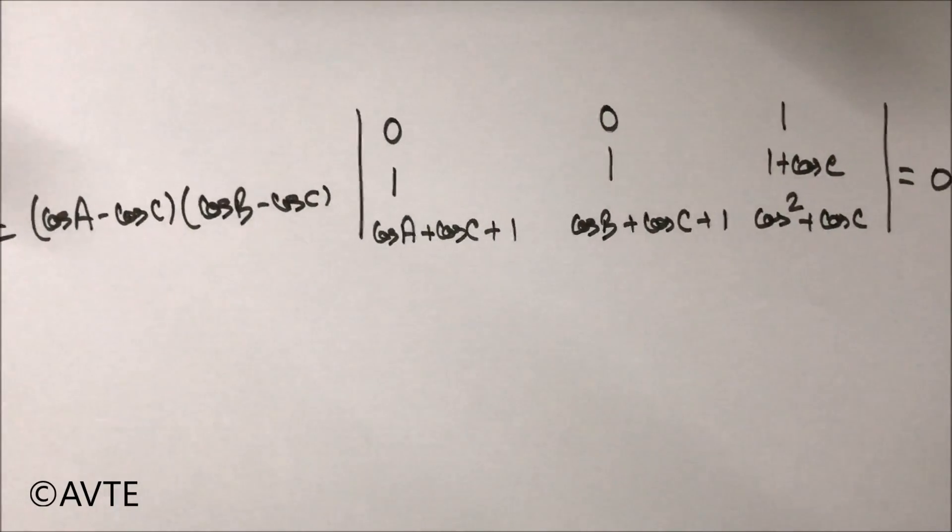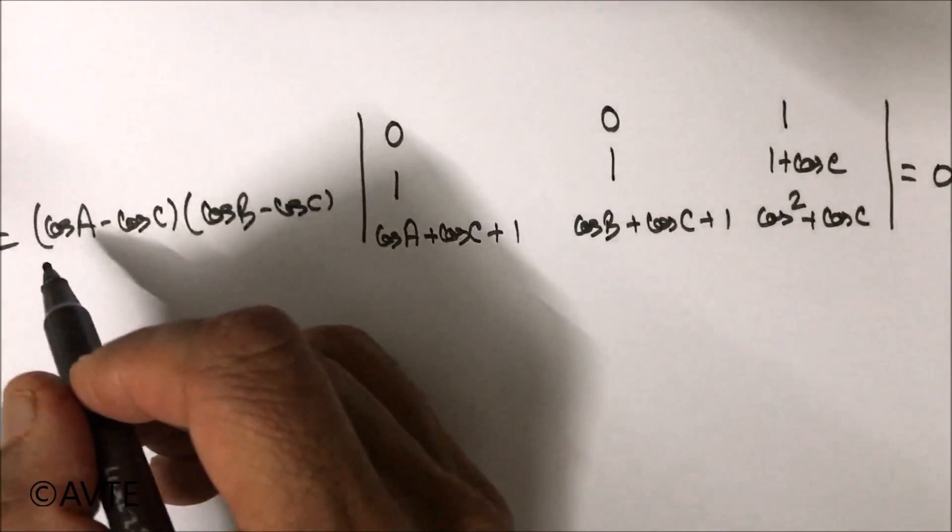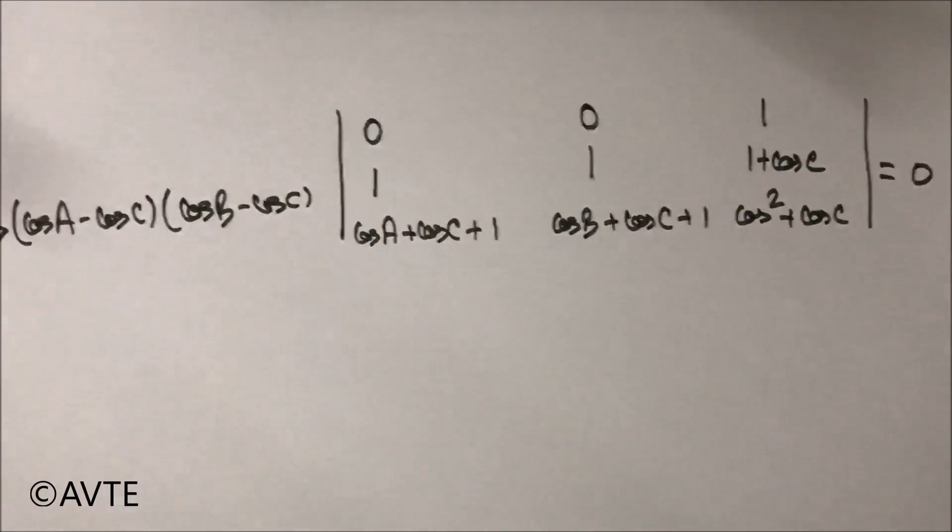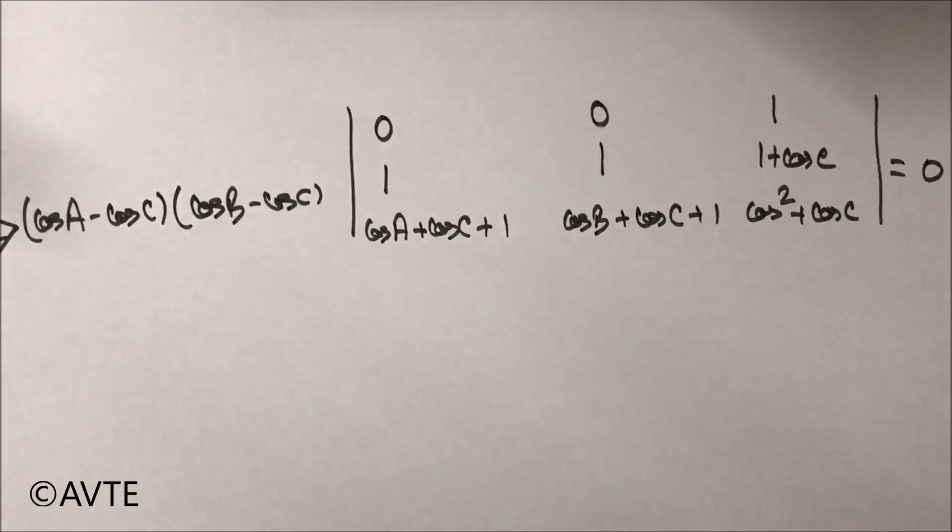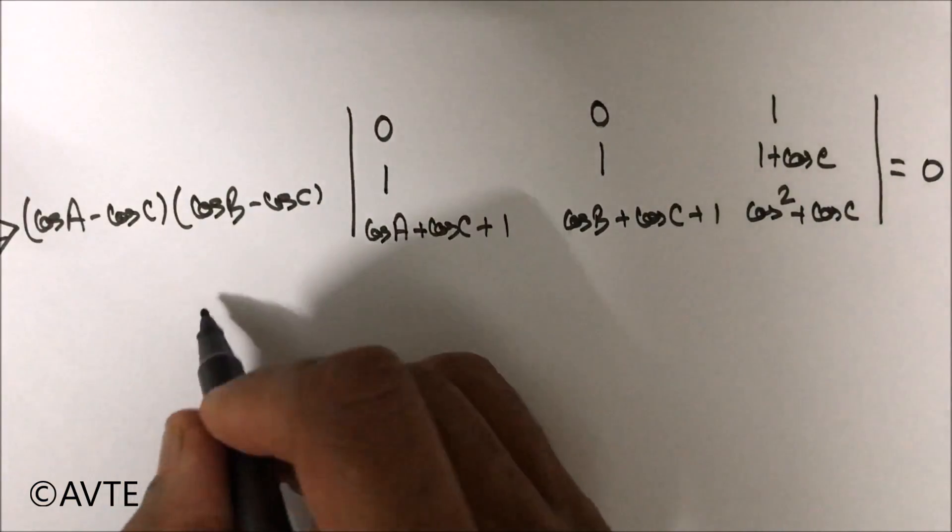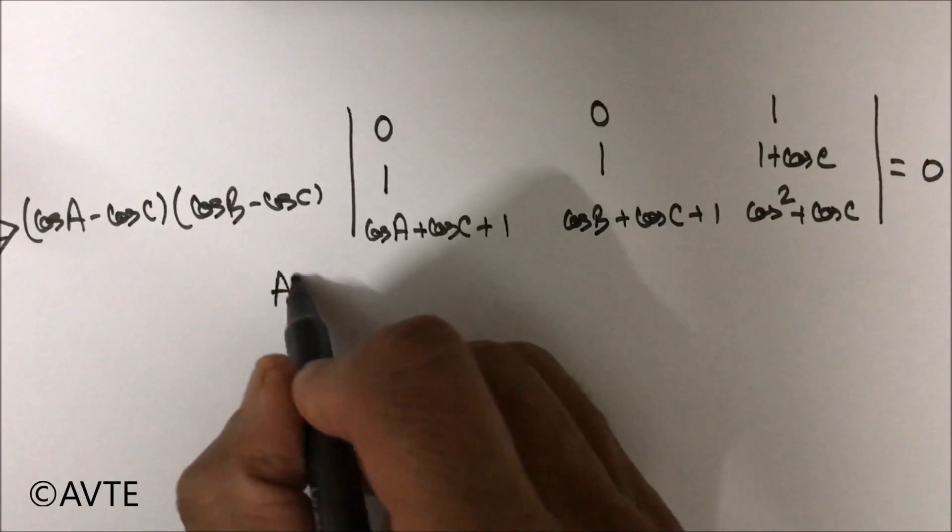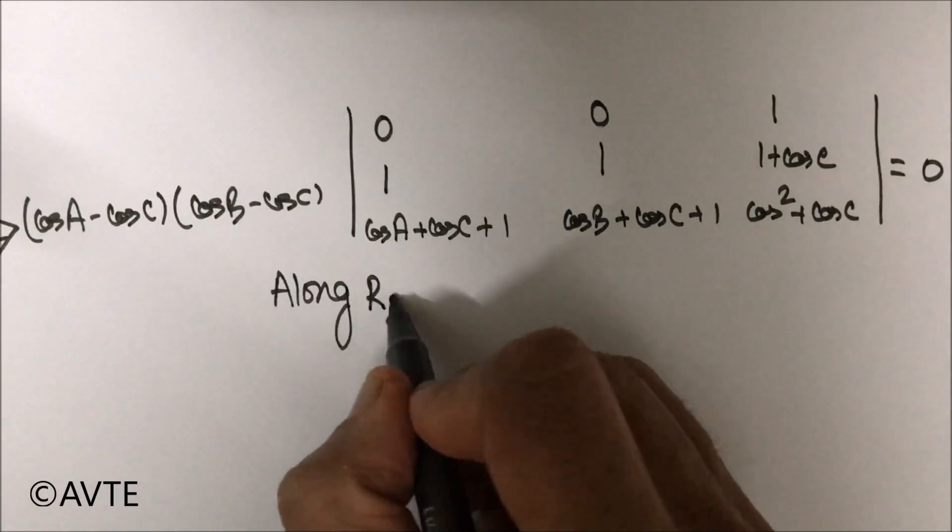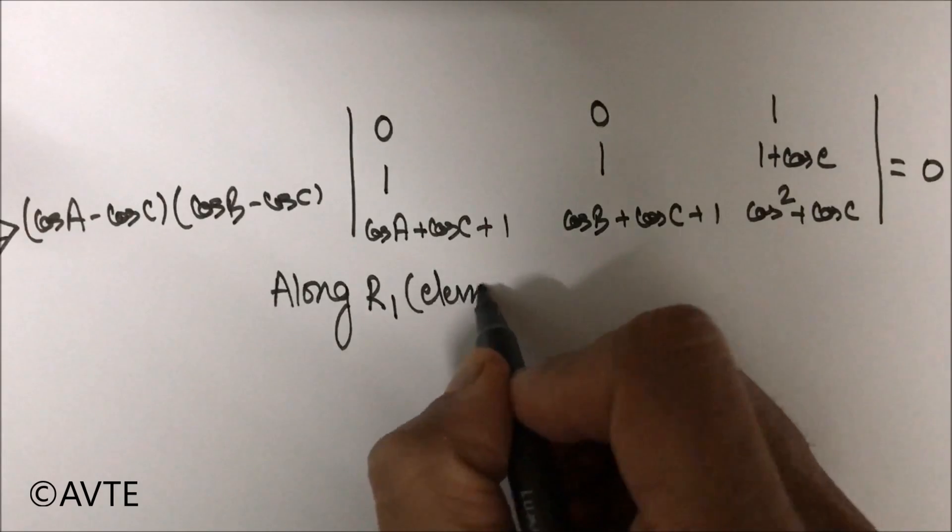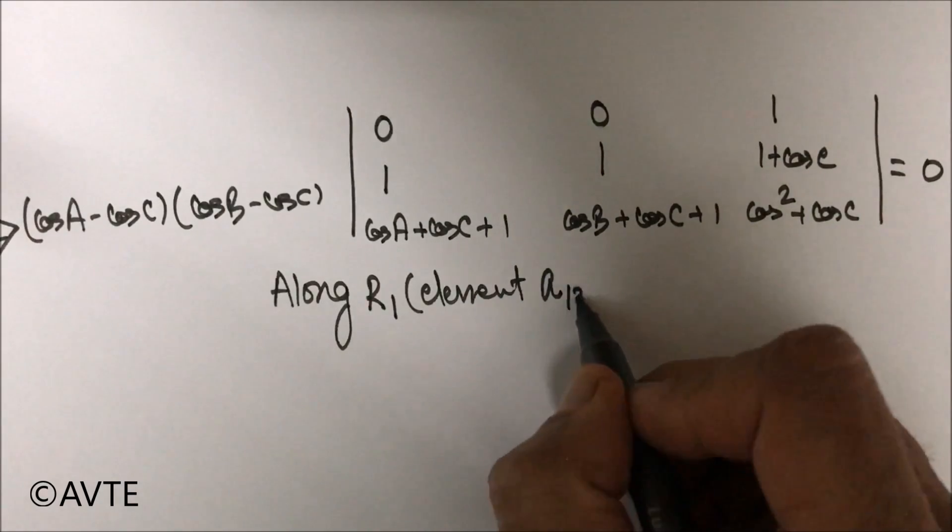So right now, you can have the simplification on this side and the other side will be zero. So because you cannot have two equalities. So right now if you want to prove, you can simply prove that cos A is equal to cos C, which means A is equal to C. So you right now you can prove that the triangle is isosceles, but we'll solve it further and we'll solve the remaining determinant, and that is along R1 using the element A13.